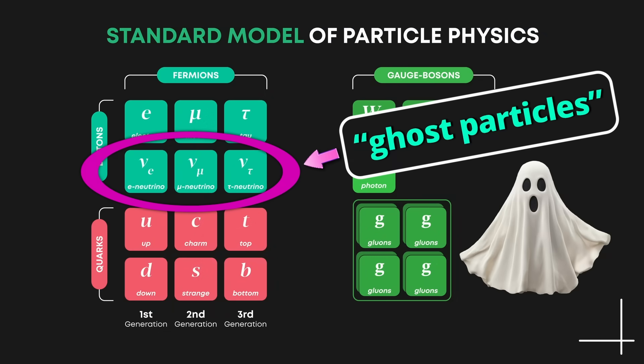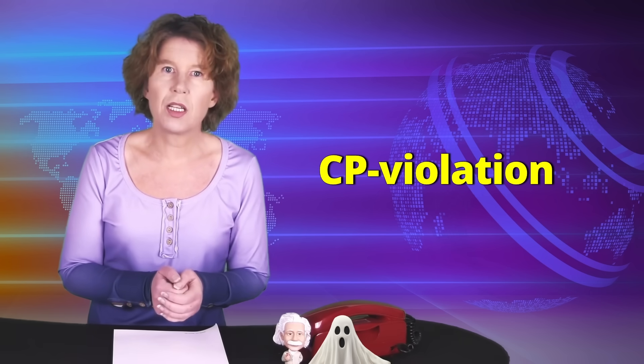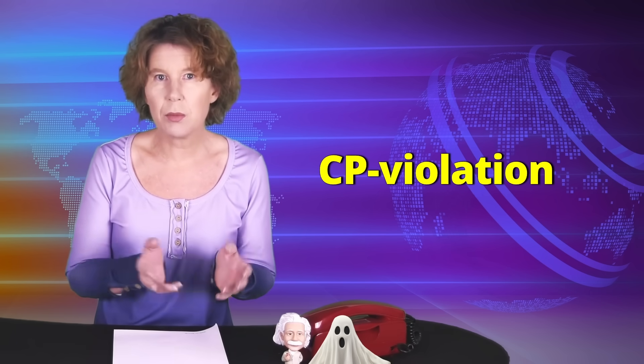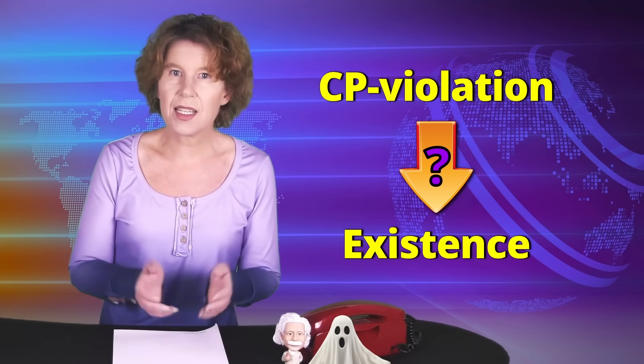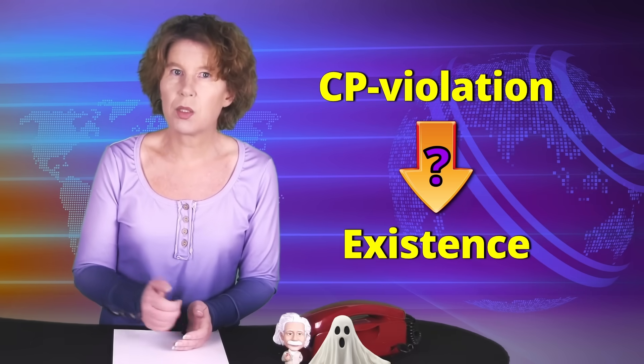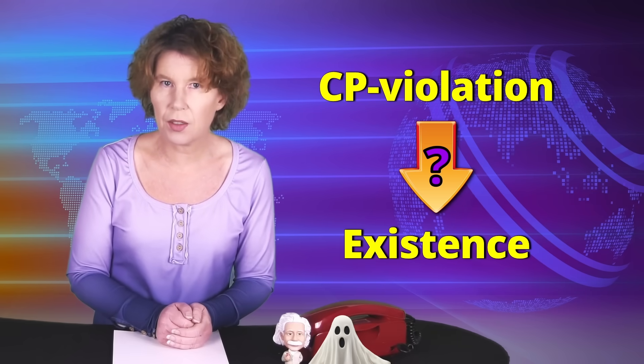Neutrinos are often called ghost particles because they mostly go through matter undisturbed. The idea that DUNE will unravel the mystery of our existence comes from it measuring CP violation among neutrinos. It's this CP violation that particle physicists claim is related to our existence because, they say, it's necessary to explain why there is more matter than antimatter in the universe.